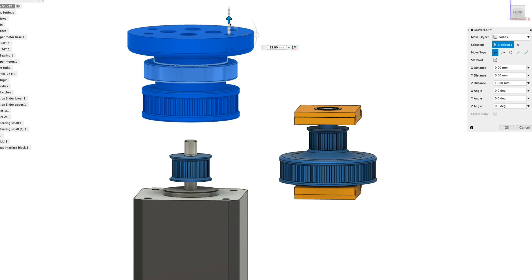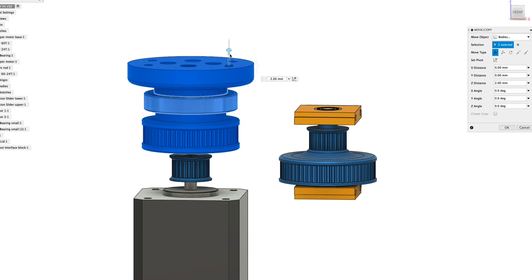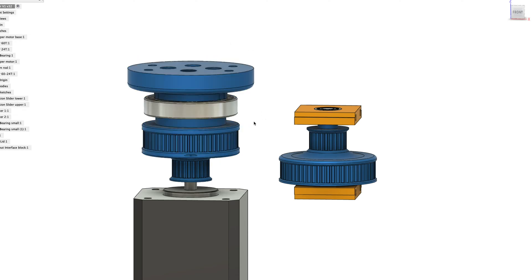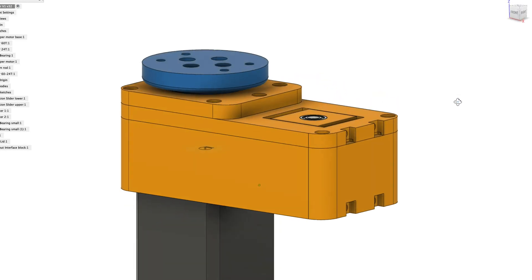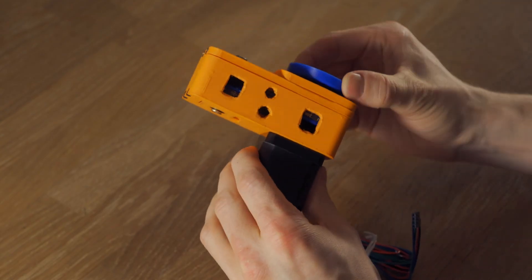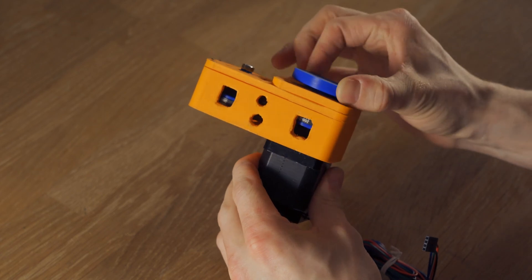To make things more compact, I had the idea to let the output gear rest on the shaft of the stepper motor, of course with a ball bearing in between. This connection also helps to improve the angular stability of the output shaft.